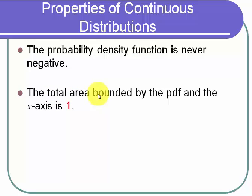The total area bounded by the probability density function and the x-axis is always equal to one. We're going to use that over and over again. That makes sense because it says the probability of something happening is 100%. If you throw a dart at a number line, the probability you'll hit somewhere between negative infinity and infinity is one — that's everything.